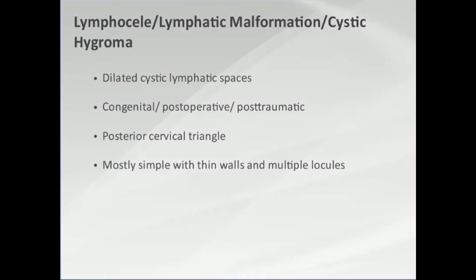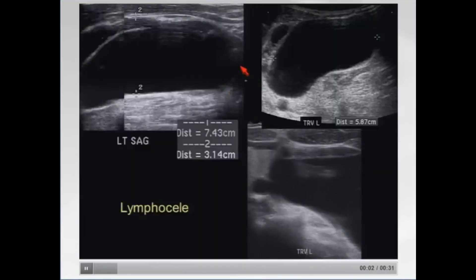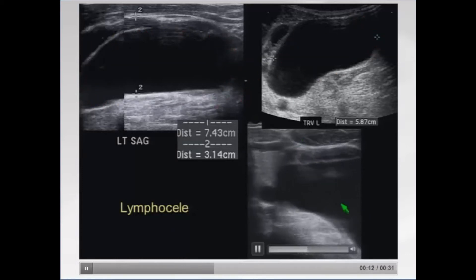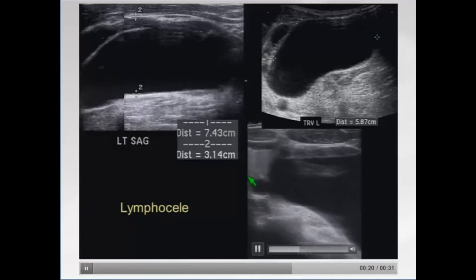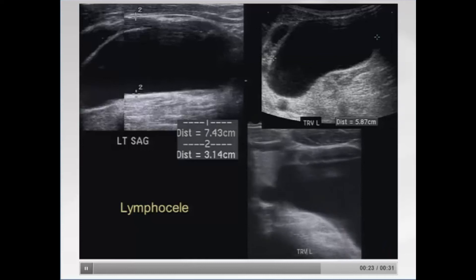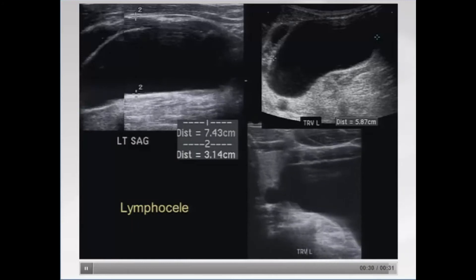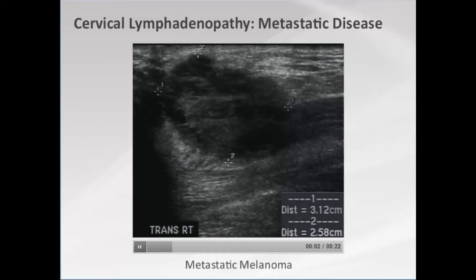Another thing to think about when you see a fluid collection in the neck is a lymphocele, sometimes called a lymphatic malformation or cystic hygroma. These can be congenital, post-operative, or post-traumatic, and occur in the posterior cervical triangle. Here's a young man with a palpable fullness — a seven-and-a-half centimeter fluid collection in the left lower neck. On the clip, when we push on it, it moves completely separate from the thyroid gland. The surgeon had to go all the way down to the thoracic duct because it was ballooning right off it.